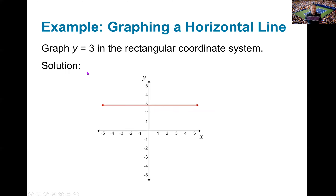If I graph a horizontal line — say, y equals 3 — you go up to y equals 3. That gives the ordered pair (0, 3), so it has a y-intercept of 3. No matter where you go for x, the y value is always 3. It has a y-intercept of 3 but also a y value of 3 at any other value of x. So you draw your horizontal line at y equals 3.